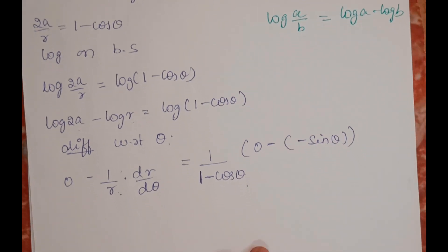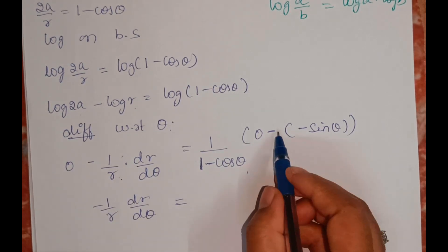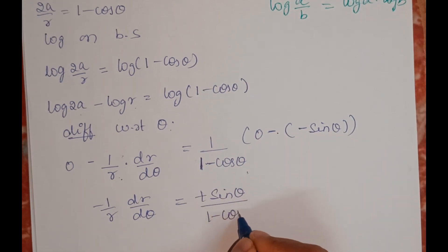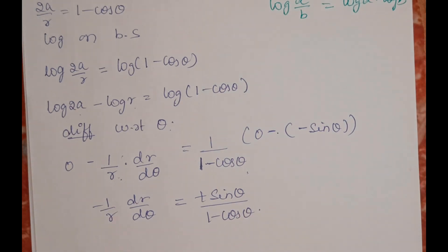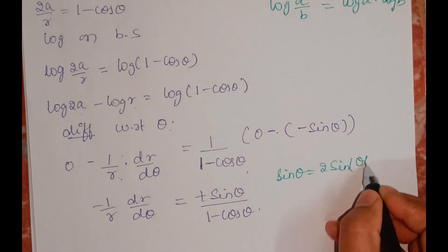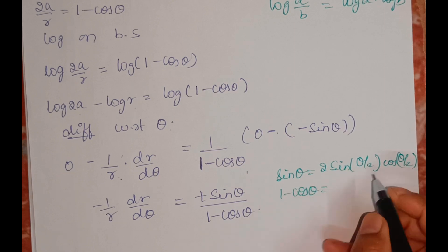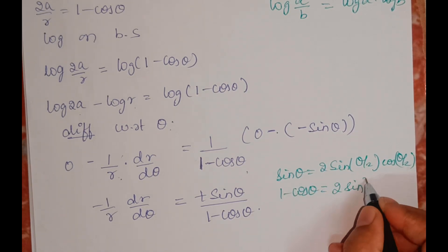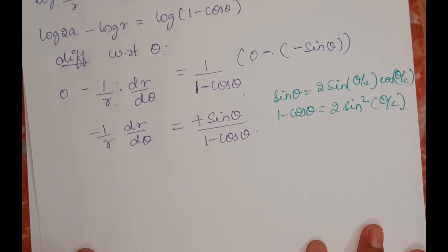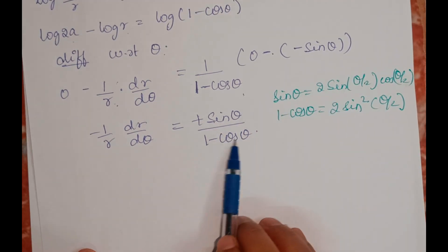So -1/r · dr/dθ = +sinθ/(1 - cosθ). Now I can write sinθ as 2·sin(θ/2)·cos(θ/2) and (1 - cosθ) as 2·sin²(θ/2). I will substitute these into the expression.